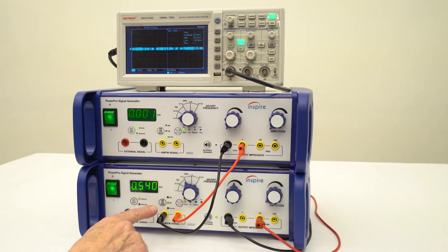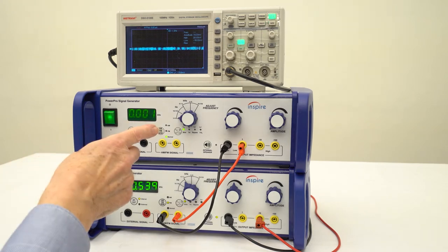Frequency modulation requires an input up to plus or minus 3 volts, again from the extra signal generator.